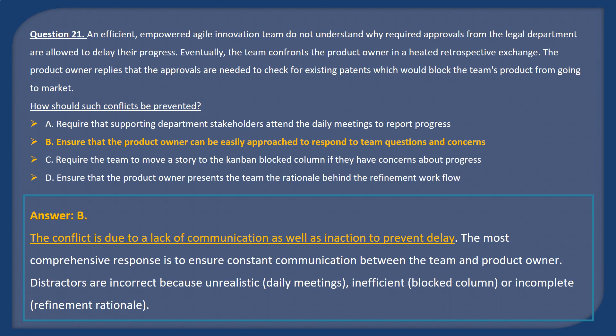Answer B. The conflict is due to a lack of communication as well as inaction to prevent delay. The most comprehensive response is to ensure constant communication between the team and product owner. Distractors are incorrect because they suggest unrealistic daily meetings, inefficient blocked columns, or incomplete refinement rationale.